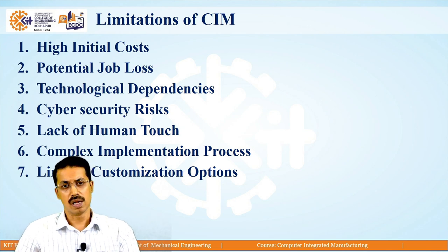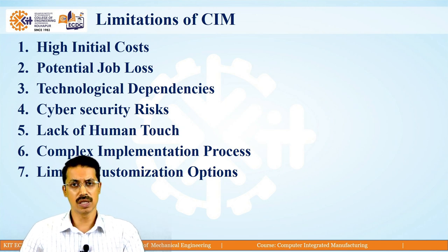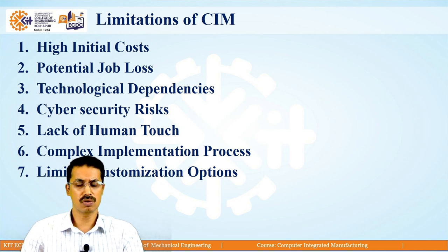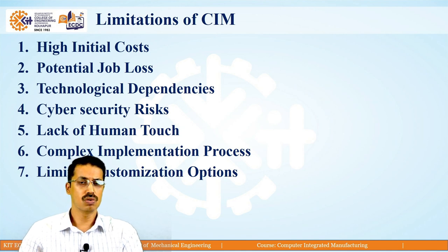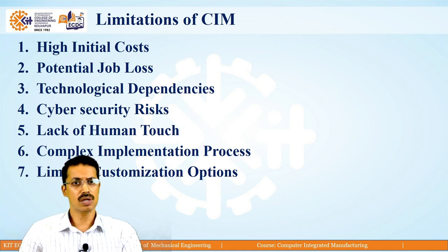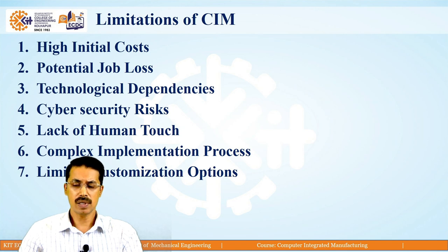The next limitation is technological dependency — whatever high-end software or high-end machinery we are purchasing, we are depending on that particular machinery for manufacturing our product. Workers and employees must be aware of that high-end technology, so we are dependent upon that high-end technology, machinery, or equipment.